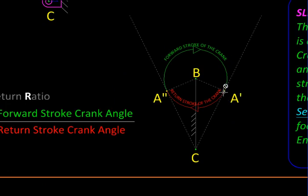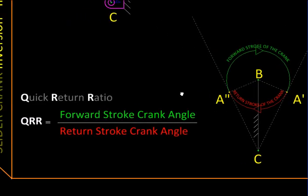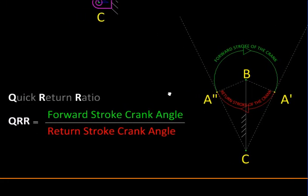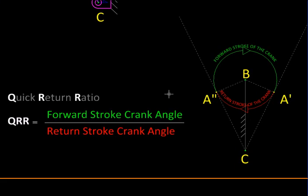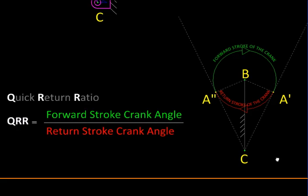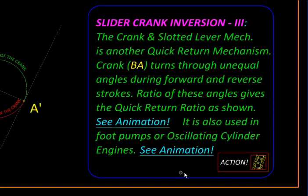Again here we can see the angle turned by the crank during the forward stroke, shown in green, and the return stroke, shown in red, are unequal. Because this will be usually connected to an electric motor, these angles directly translate into time because electric motors rotate uniformly. The ratio of these two angles, the forward and the return stroke angle, will give us the quick return ratio.